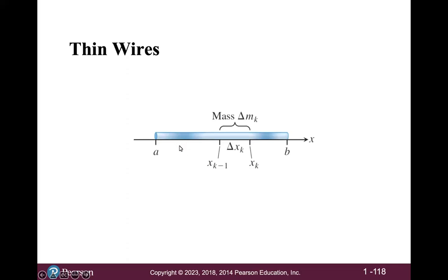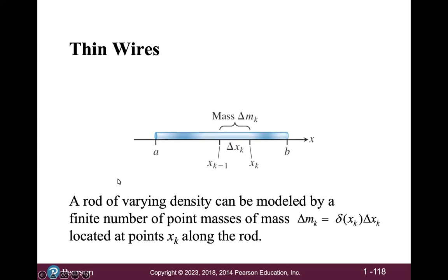So we still need to make this into a calculus problem. Now we imagine a thin wire going from x equals a to x equals b. A rod of varying density can be modeled by a finite number of point masses, each with mass delta m sub k. Delta m sub k equals the density at point x sub k times delta x sub k, which is the width of the small amount of wire surrounding that point.